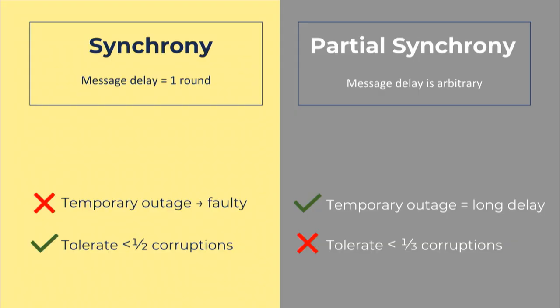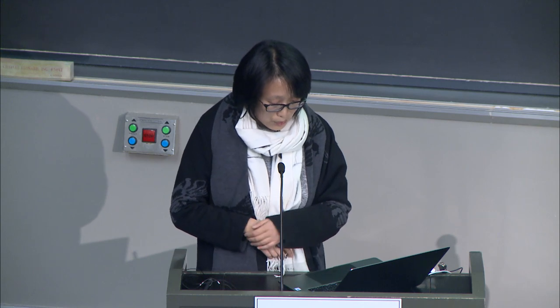In the case of Coinbase, its short-term outage is just the same as a long network delay in the partially synchronous model, so it's going to be fine when it comes back online. But you may think partially synchronous is strictly better — why do we even care about synchronous? Well there is a catch: any partially synchronous protocol cannot hope to tolerate more than one-third corruption, whereas if you work with synchronous you can tolerate up to minority corruption. So we seem to be at a dead end — we have to pick either to be unrobust in one way or the other.